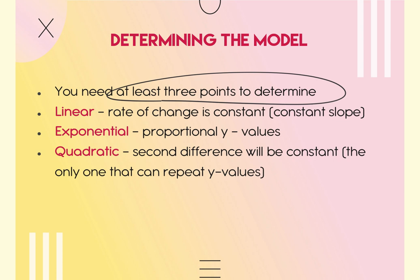For a linear function, the rate of change is constant — y2 minus y1, y3 minus y2 are all the same. That constant is your slope. For exponential — just a times b to the x, no k — the ratios of consecutive y-values are all equal. For quadratic, the first differences aren't equal, but the second differences are.